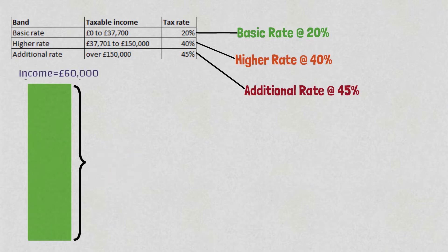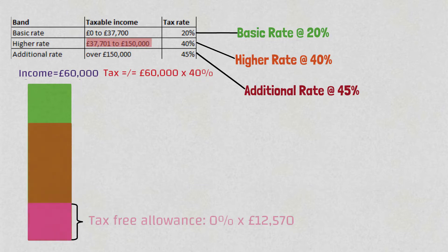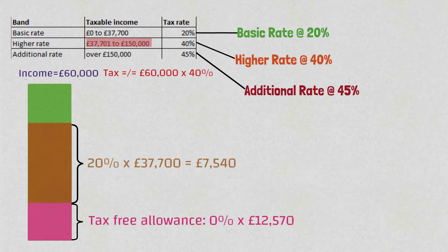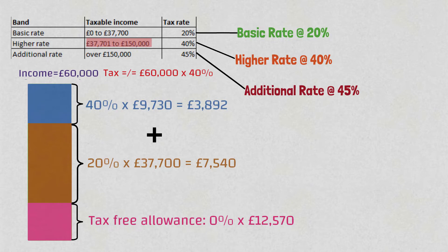You're only taxed on the income above the threshold at the corresponding tax rate. So for example, if you earn £60,000 a year that puts you in the higher tax bracket of 40%, but that does not mean you have to pay 40% of £60,000. In that case you would pay 20% tax on the first band of £37,700 and 40% on the amount above the threshold, which works out to £7,540 pounds of tax.